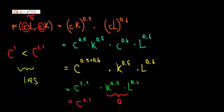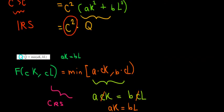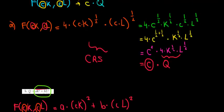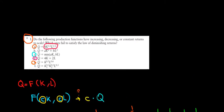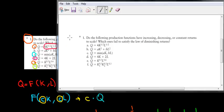Now let's have a look at the last one, which is part F. This is our function in part F. We have K1 and K2, so it's slightly more complicated, but let's see what's going to work out.